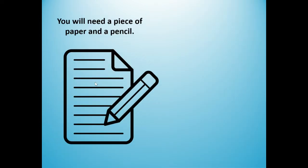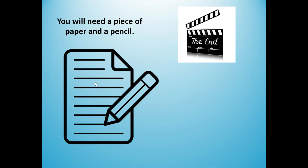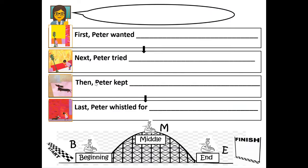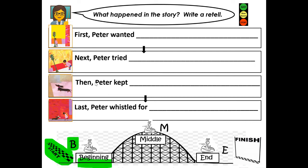For this lesson, you will need a piece of paper and a pencil, because at the end of the lesson you're going to challenge yourself and answer this question: What happened in the story? Write a retell. When you write the retell, you're going to talk about what happened at the beginning and use the sequence word first. Then slow down and talk about the middle using next and then. And finally talk about what happened at the end using the sequence word last.